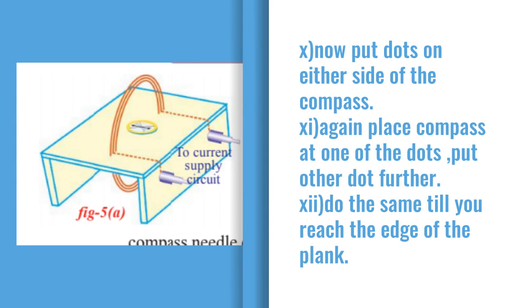When it stops in a particular direction, put dots on either side of that compass. Again place that compass at one of the dots. When it stops in particular direction, just put dots on either side.